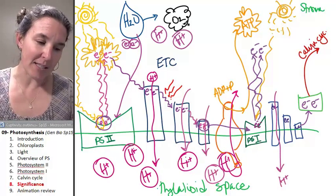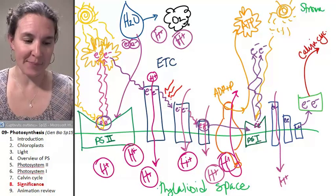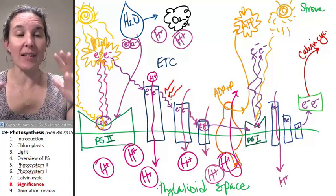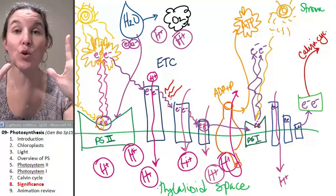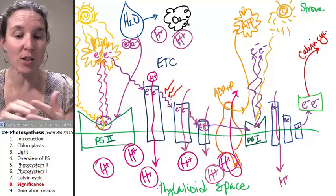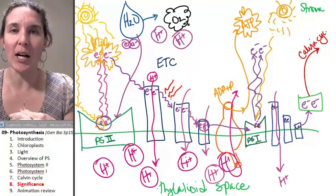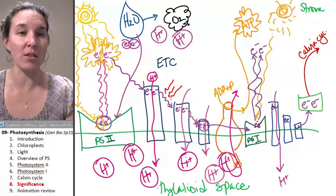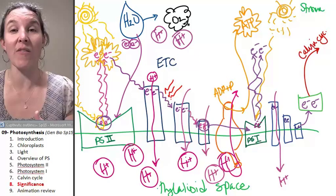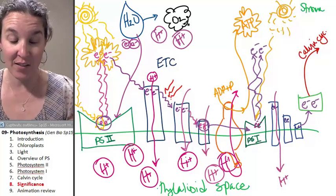When photosynthesis began, there was just this explosion of biodiversity. As critters, it was like a jackpot. As critters went, dude, I can take advantage of this kind of environment, this oxygen that's available to me.